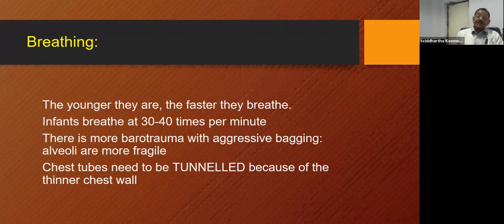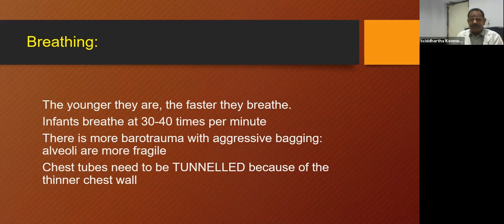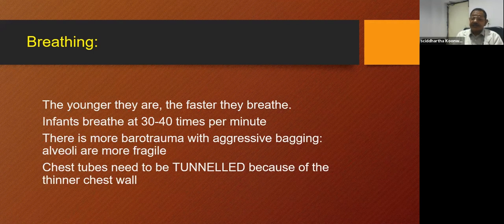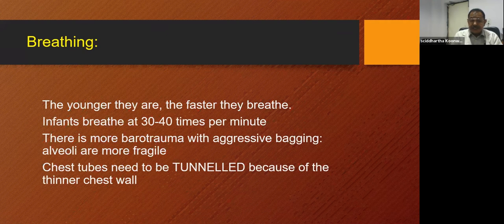For breathing in the primary evaluation, the younger they are, the faster they breathe — infants breathe at 30 to 40 times per minute. Alveoli are more fragile, so there is more barotrauma with aggressive bagging. Bagging should just suffice to produce a little bit of chest movement. Chest tubes need to be secured carefully because of the thinner chest wall, as they may come out easily.